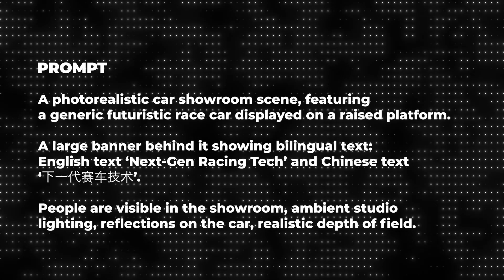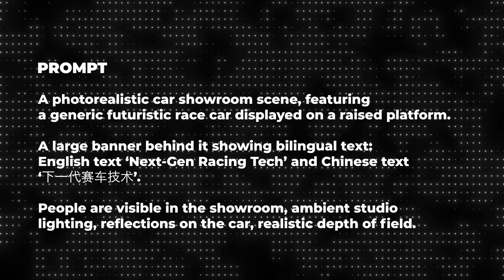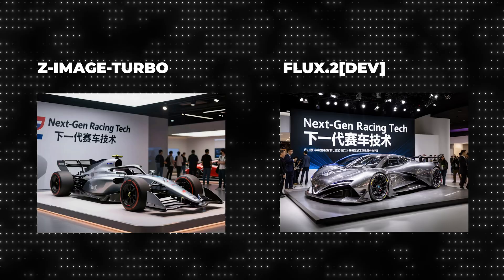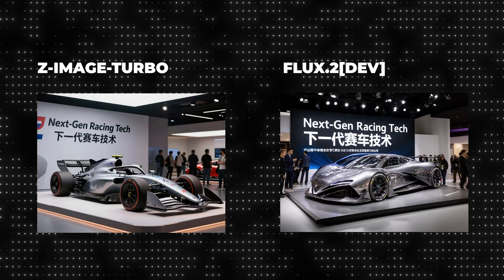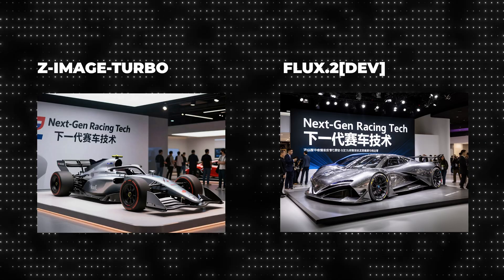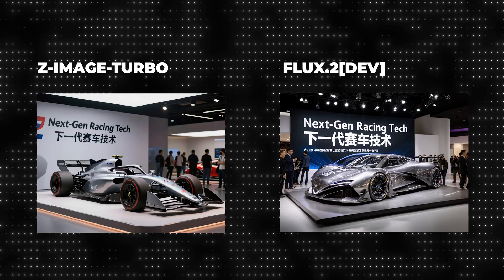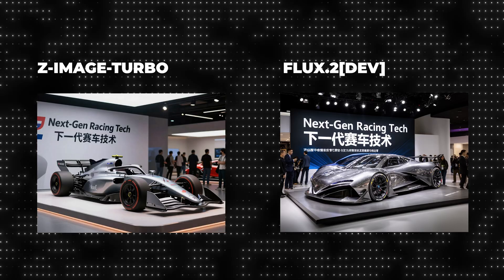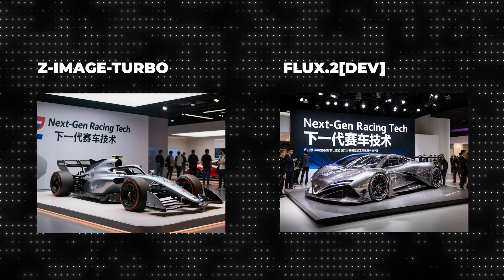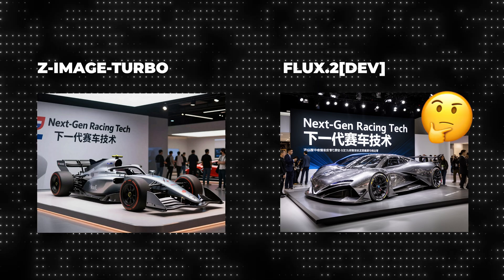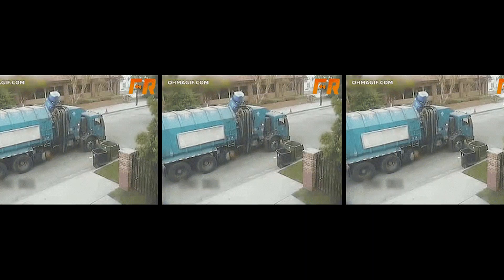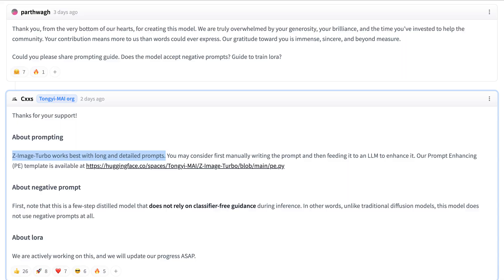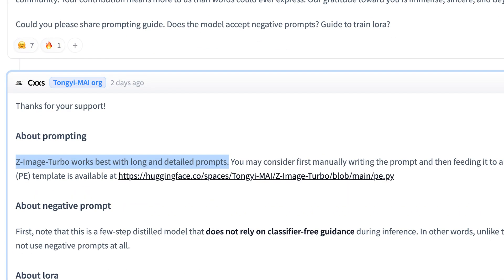LAP 2. Here's our prompt for a Car Expo banner, testing text placement, indoor lighting, and glossy surfaces. Both models gave us the showroom, the text, and people in the background. Z Image Turbo stuck to the brief with the track-ready race car, but Flux 2 went creative overachiever — a supercar with a spoiler and extra text on the banner, which we didn't ask for. As always, output quality depends on input quality, and Z Image Turbo shines when you feed it long, detailed prompts.